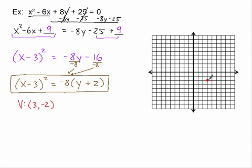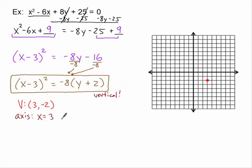There's my vertex. Now the axis of symmetry — since we're talking about a vertical parabola, my axis of symmetry is going to be a vertical line, so it'll be x equals 3, the value of h. You can dot that in if you want to.